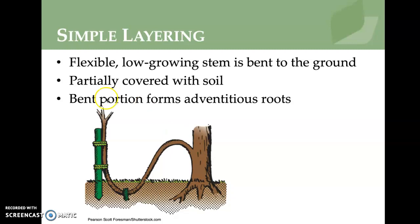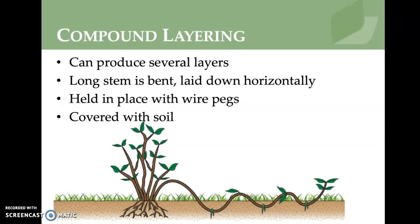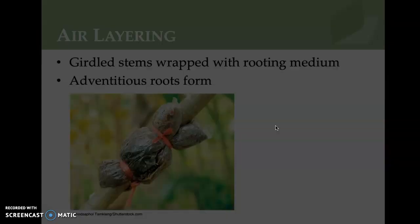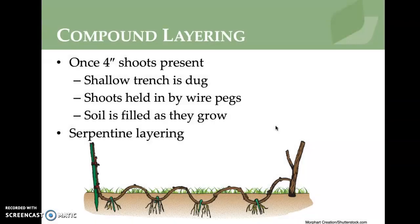Compound layering uses the same concept but takes one branch and does it several times to eventually create several different plants. Once four-inch shoots are present, shallow trenches are dug and the shoots are held in with wire pegs and filled with soil as they grow. Serpentine layering is a variation of compound layering where shoots are laid horizontally, with some buds exposed and others covered with soil in an alternating pattern.